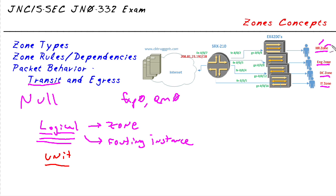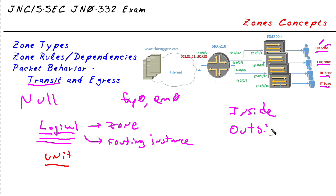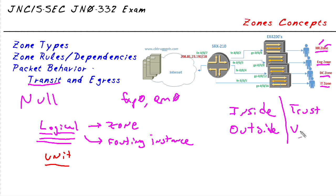You do need to think about how you're going to create your zones based on how your interfaces are set up. A lot of people keep it really simple — an inside and an outside. In the Junos world, our default behavior on branch devices will have some zones already in there: a trust and an untrust.